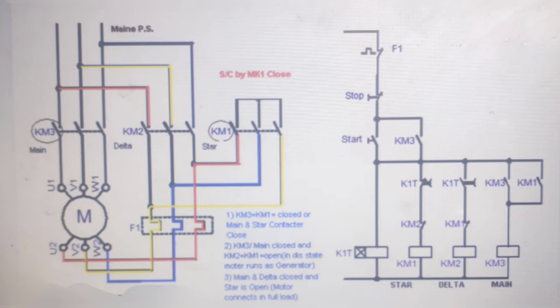Star and delta conductors are electrically interlocked. Now for power lines, R Y B power line goes straight to the main conductor KM3.